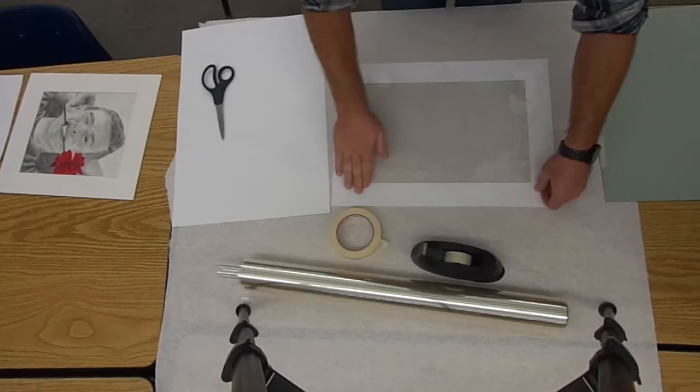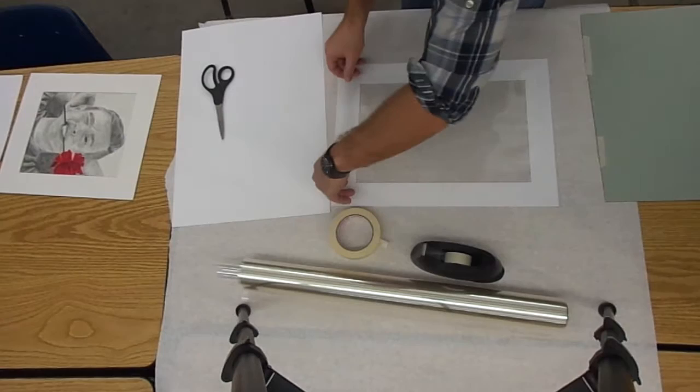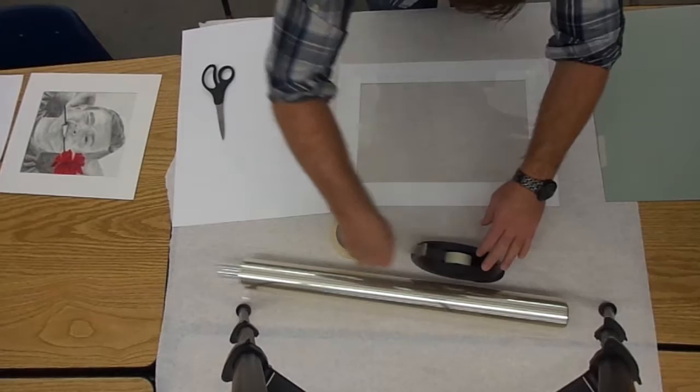Lay that down. Again, with this, you're not pulling super tight when you're laying this down. If you do, it's going to warp the actual mat.